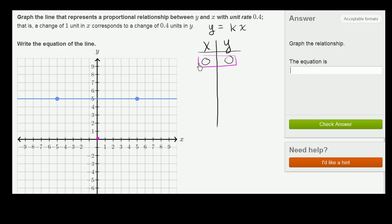Now let's think about what happens as we increase x. So if x goes from 0 to 1, we already know that a change of one unit in x corresponds to a change of 0.4 units in y. So if x increases by 1, then y is going to increase by 0.4.